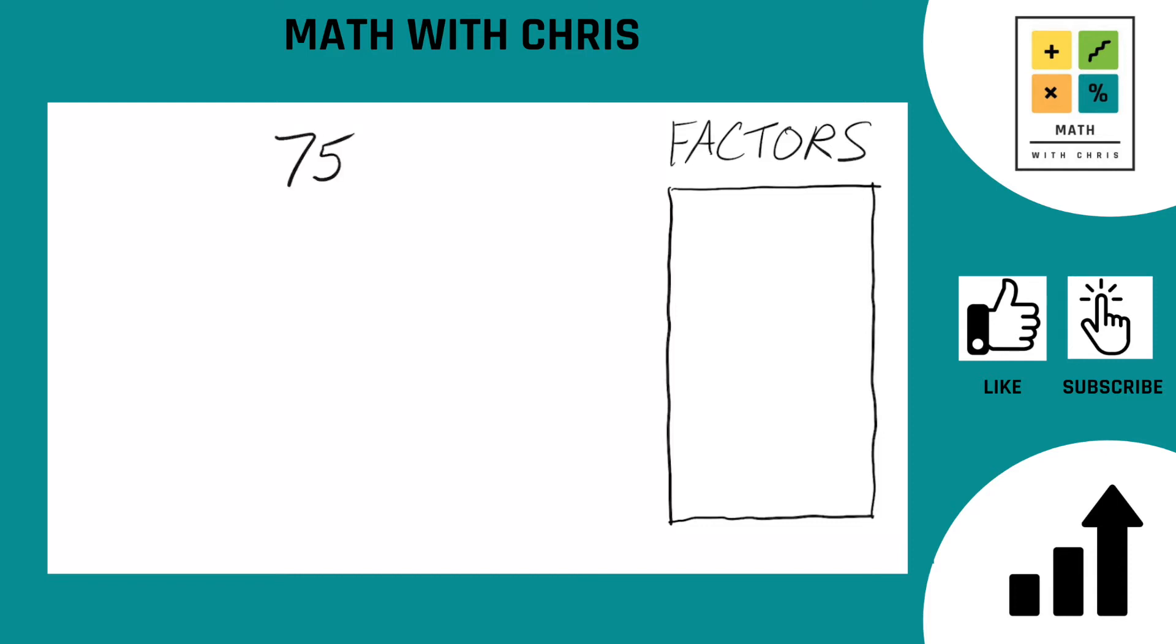We got to find the factors of that bad boy right there. First thing we always do is put in our bank the two easiest factors to find. That's one and the number itself, 75.